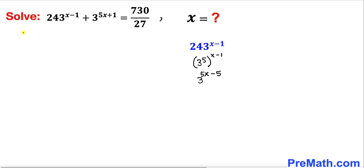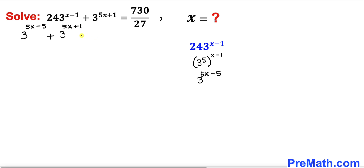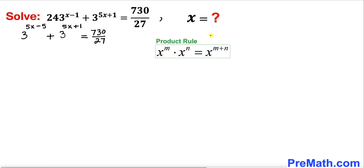This could be written as 3 power 5x minus 5, plus 3 power 5x plus 1, equals to 730 divided by 27. Now let's recall the product rule of exponents, which we are going to apply on the left hand side.